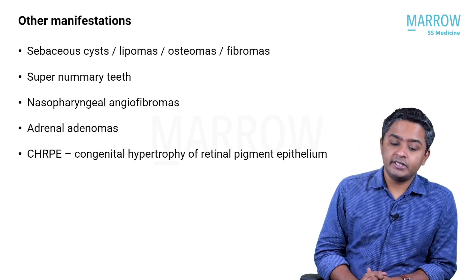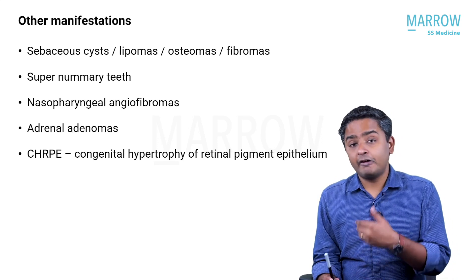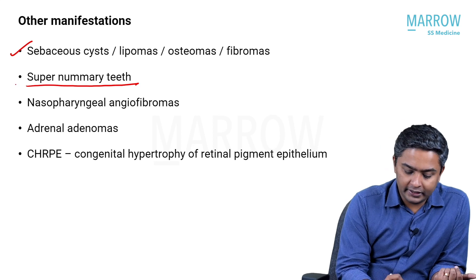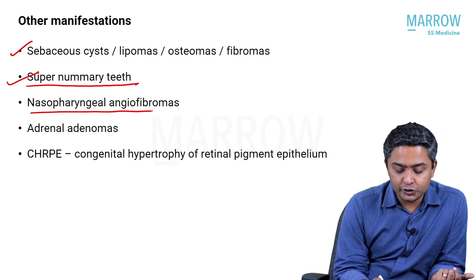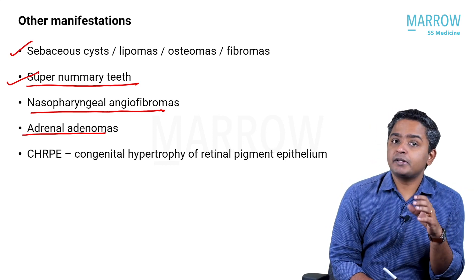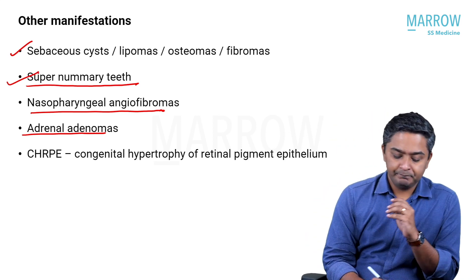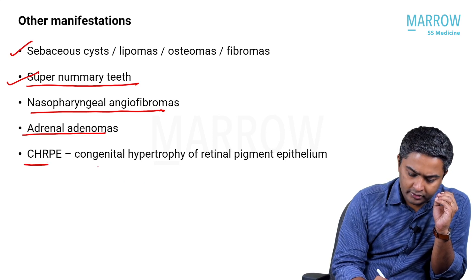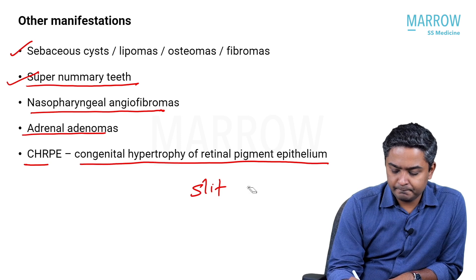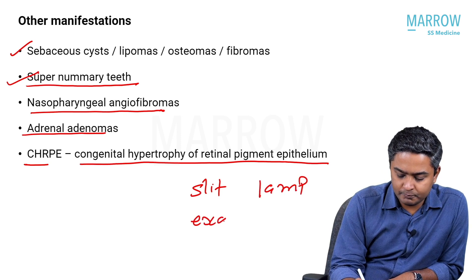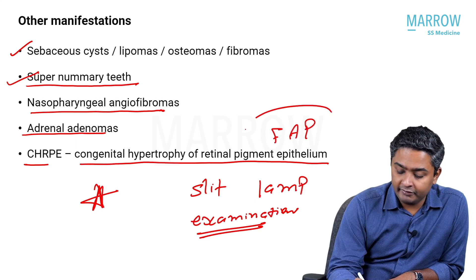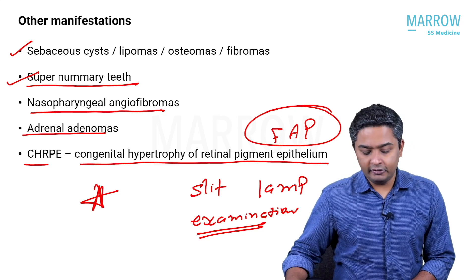Other manifestations include skin tumors like sebaceous cysts, lipomas, osteomas in bone, and fibromas. Supernumerary teeth can be a possible MCQ point. There can also be nasopharyngeal angiofibromas and internal adenomas — all described with FAP but rare. CHRPE, or congenital hypertrophy of retinal pigment epithelium, is the ocular finding seen in FAP patients, usually picked up on slit lamp examination.